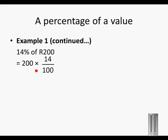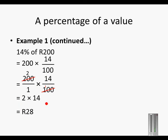So we have done the calculation so far. Two hundred can also be written as two hundred over one. So hundred divides into itself once, and it divides into two hundred twice. So we are left with two times fourteen. So fourteen percent of two hundred is equal to twenty-eight rand.